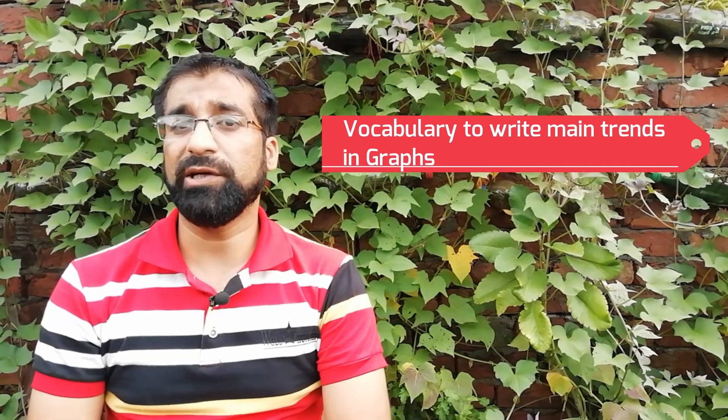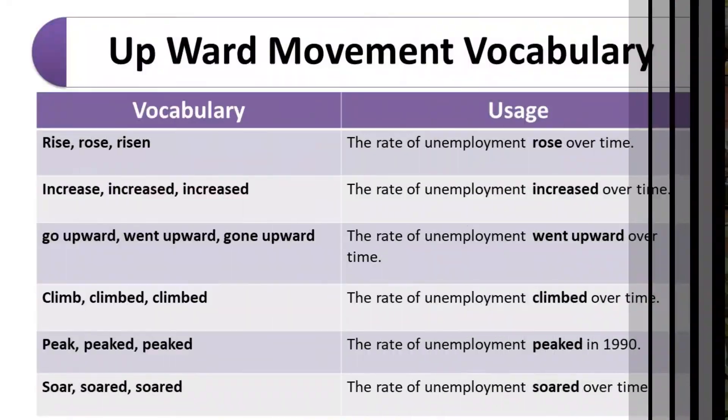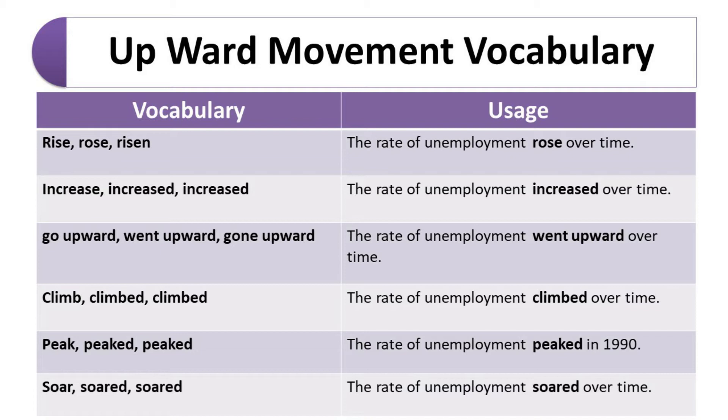We have looked at vocabulary for the IELTS academic writing task one introduction. While writing main paragraphs, graphs can have different trends — sometimes lines or bars are moving upwards, sometimes downward, sometimes they stay at their place, and other times they make a zigzag pattern. In all these different scenarios we need different kinds of words. Let's learn the words we can use to talk about different trends in these graphs.